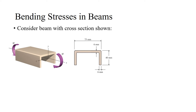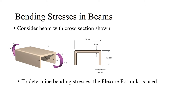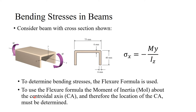Let's take a look at a channel with a cross section shown. To determine the bending stresses caused by our bending moment, we need to use the flexure formula: σx = −My / Iz. This formula uses the moment of inertia Iz, which is the moment of inertia about the centroidal axis z. We need to determine the location between some reference and our centroid, which we call y-bar.